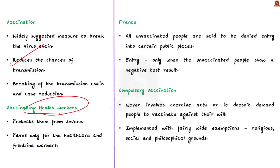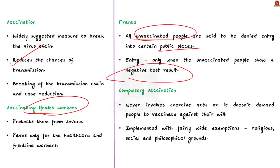From July 21st, France also announced it will deny unvaccinated people entry into certain public places — theatres, sports venues, festivals, cafes, bars, restaurants, shopping malls, and long-distance trains — unless they show a negative test result. These rules have created great uproar and protests in France, with many people feeling that compulsory vaccination is an infringement on their basic human rights.